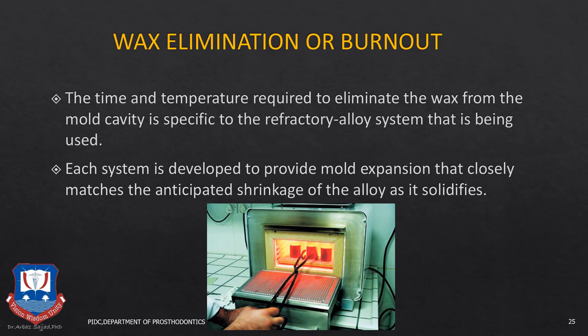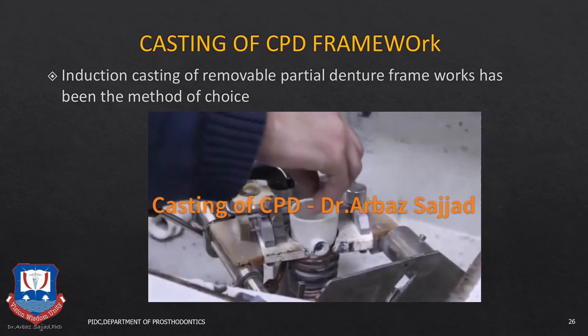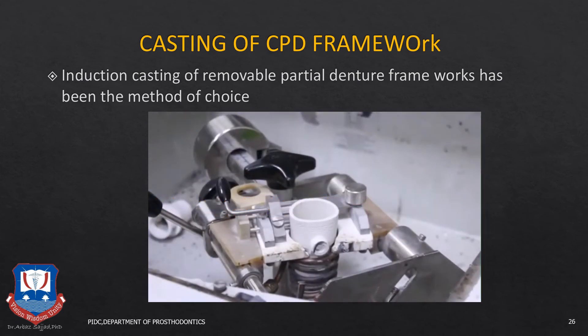After investing, the wax elimination is carried out because the entire wax sprues, the CPD framework, and the reservoir wire are all made up of wax. First a burnout is done by placing the investment rings inside a burnout furnace. Once the burnout is done — that is, wax is eliminated from the mold — casting of the CPD framework can begin. For the past decade, induction casting has been the casting method of choice for all casting works. Induction casting is based on electric currents induced in the metal core from a magnetic field, using a heating coil of copper tubing.